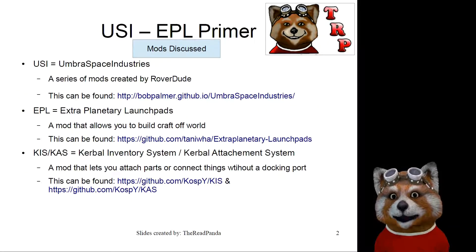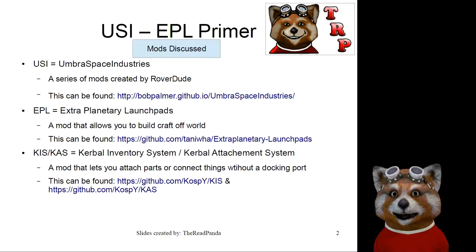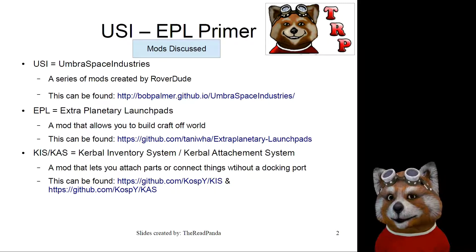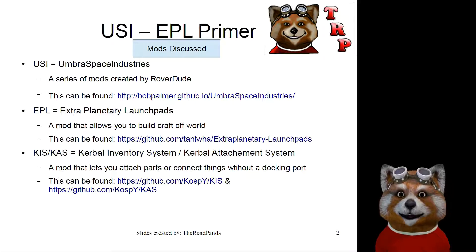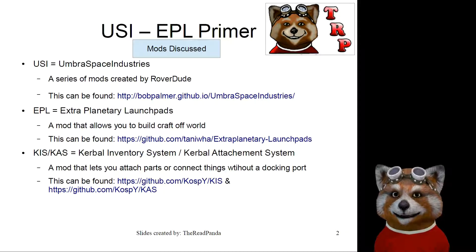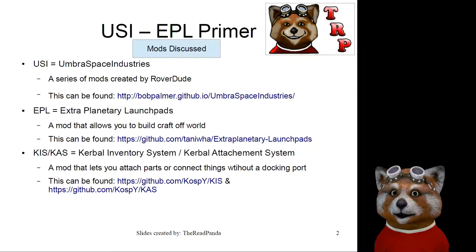First of all, you're going to need some mods. We're using USI, which is Umbral Space Industries, a series of mods created by RoverDude — you can see the link for that off of GitHub. We're using Extraplanetary Launchpads, and we're going to be using Kerbal Inventory System and Attachment System in some of our later videos — you'll want that for applying stakes and such. Supporting mods include the Community Resource Pack, but we're not spending too much time covering the actual mods, more how to use them.